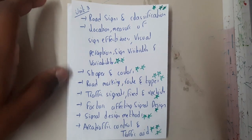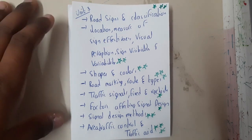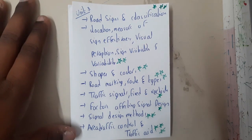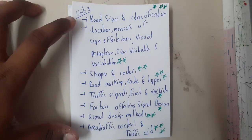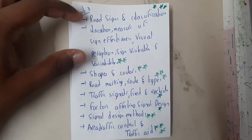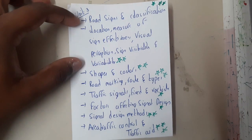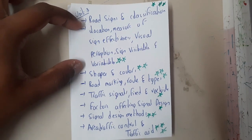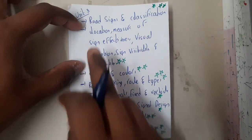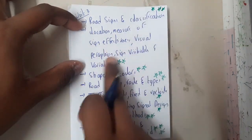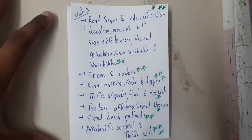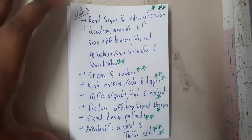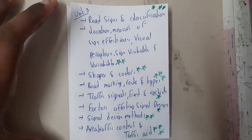Similarly, be thorough with the shape, color, and road markings, as well as area traffic control and traffic gates. Please go through each and every topic, as the examiner could directly ask you about any one or two of these topics and ask you to write about them. So please be perfect with all the topics.